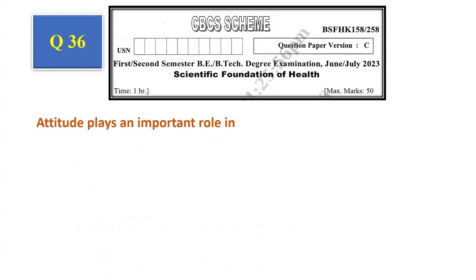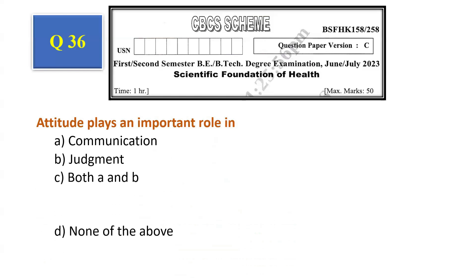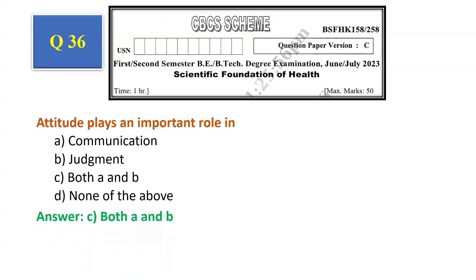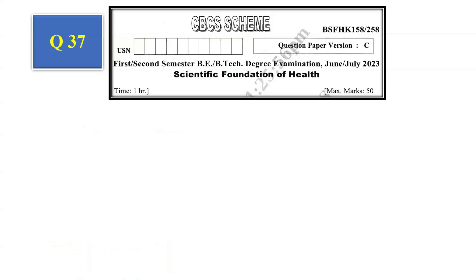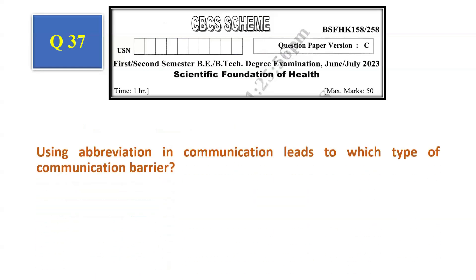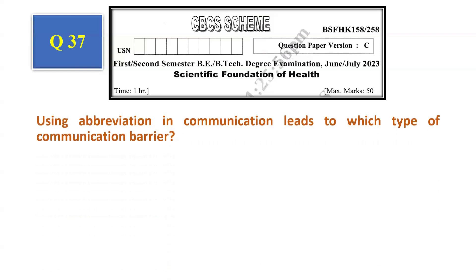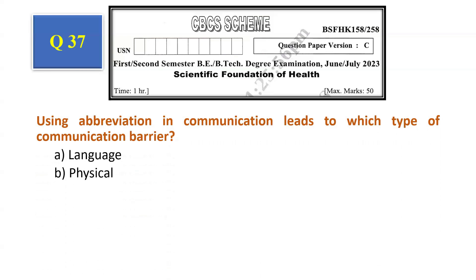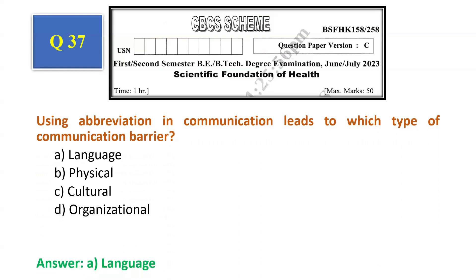Question number 36: Attitude plays an important role in — communication, judgment, both A and B, none of the above. The answer is both A and B, that is option C. Question number 37: Using abbreviations in communication leads to which type of communication barrier? Language, physical, cultural, organizational. The answer is language barrier, that is option A.